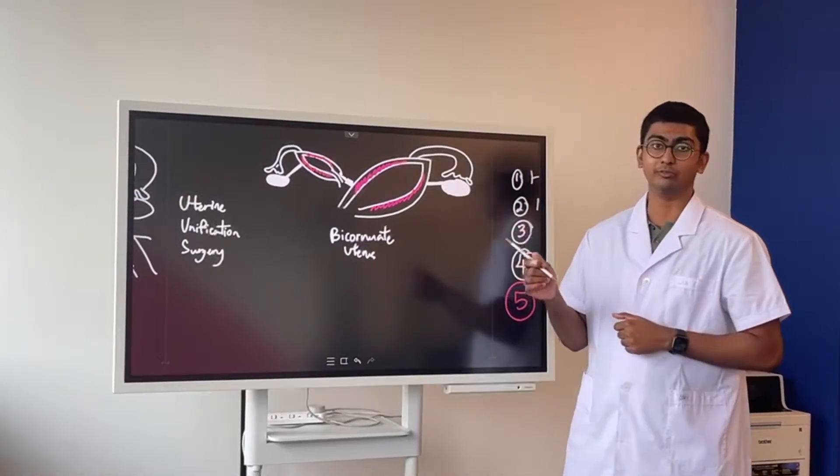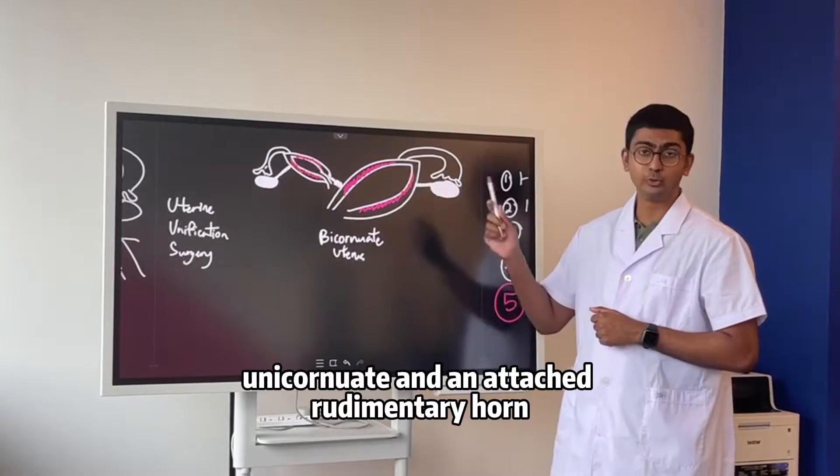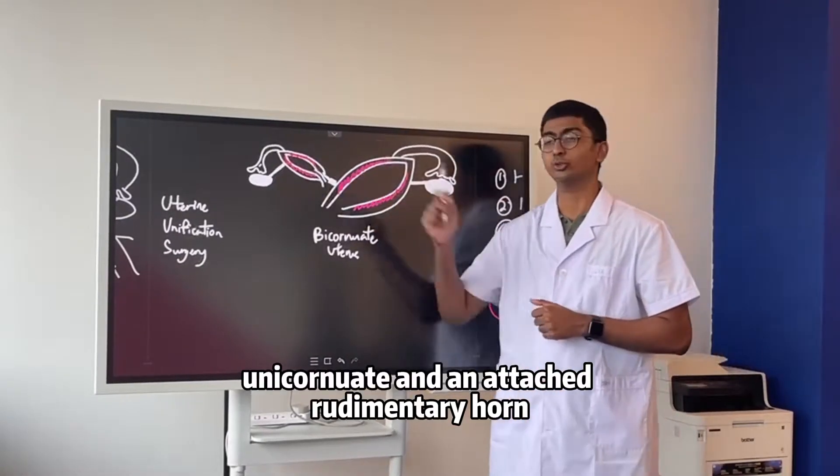Now here you can see in this diagram, I've drawn a very standard case of it: unicornuate with an attached uterine rudimentary horn.